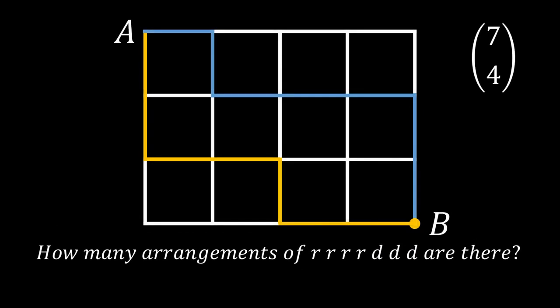The number of paths from A to B is therefore 7 choose 4. But, in general, if there are n steps and r right steps, the number of paths will be given by n choose r.